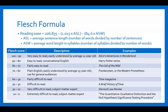A score of 30 to 10 is very difficult to read; you would need to be a subject matter expert to fully comprehend it, such as the Harvard Law Review. A score of 10 to 0 is extremely difficult — again, requiring subject matter expertise — with an example being an academic journal article titled The Quantitative Qualitative Distinction and the Null Hypothesis Significance Testing Procedure. Just the title seems more complex than all the rest.